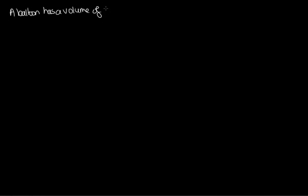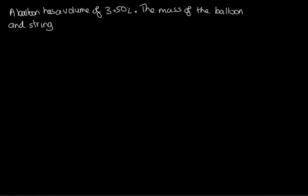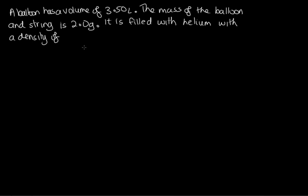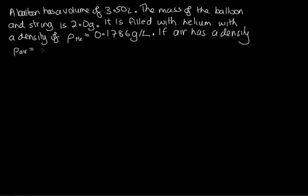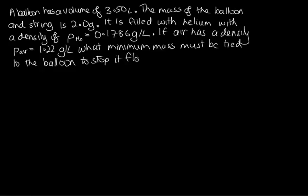Let's do a calculation involving this helium balloon. A balloon has a volume of 3.50 litres. The mass of the balloon and string is 2.0 grams. It is filled with helium with a density of 0.1786 grams per litre. If air has a density of 1.22 grams per litre, what minimum mass must be tied to the balloon to stop it from floating away? To stop the balloon flying away, the buoyancy force and weight force must be equal.